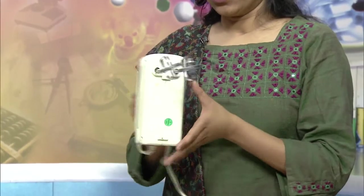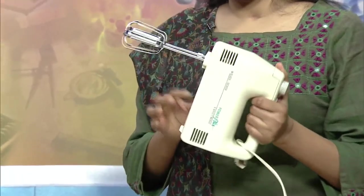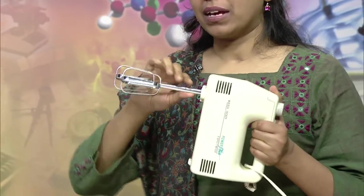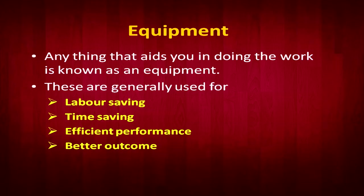For example, this is an appliance. If we take it as one unit, it is an appliance, but you can detach the individual tools that make the appliance do a particular job. We also use the term instrument — for example, a measuring instrument is used for a particular activity. If you take a refrigerator as a whole, it has trays and many other subunits combined into one unit. Equipment is anything that aids work — generally used for labor saving, time saving, with efficient performance and better outcome.